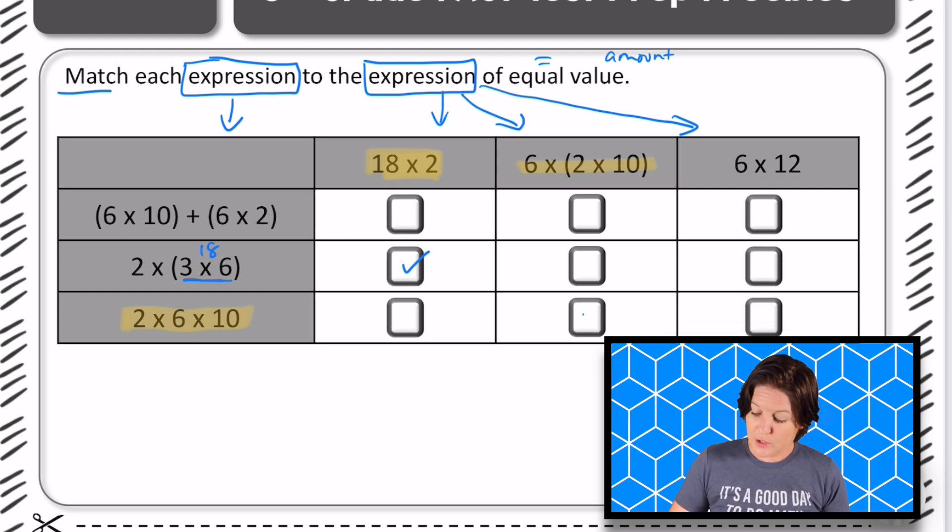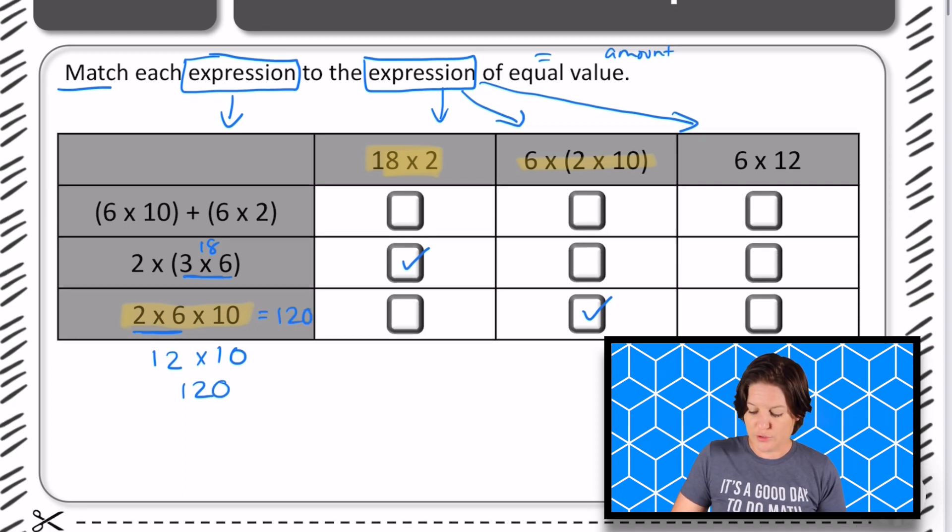So these two are also equal. And I'm actually going to take it a step further to prove it because if I were to solve this part first, 2 x 6, that's twelve. And 12 x 10 is one hundred twenty. So this one right here has a value of one hundred twenty.